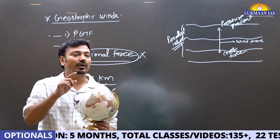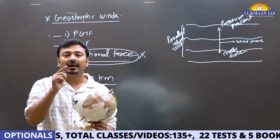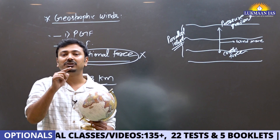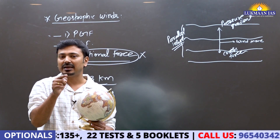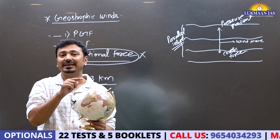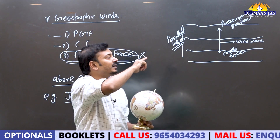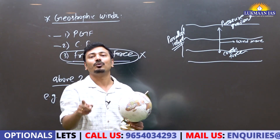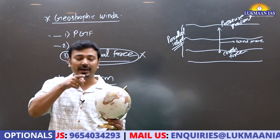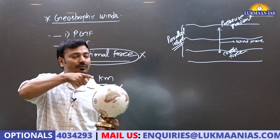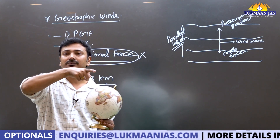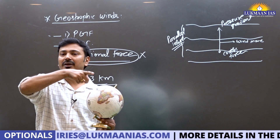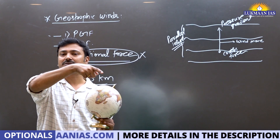In the upper atmosphere where they are formed, there is no frictional force. These winds experience a balance between the pressure gradient force and Coriolis force, and that's why they move along the isobars from west to east.